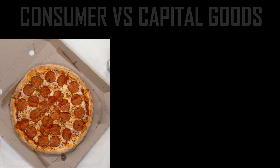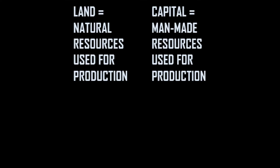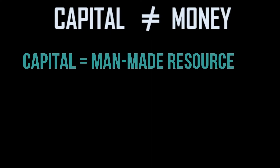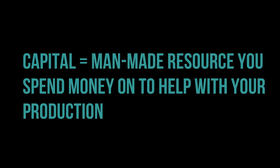The person using the machine to serve pizza to everyone is producing consumer goods. To recap: land is not only land — it includes the natural resources used to produce something. Man-made things used to produce something are called capital. Capital is not money; it is the things you buy with money from someone else to make your own product. That is all on the factors of production.